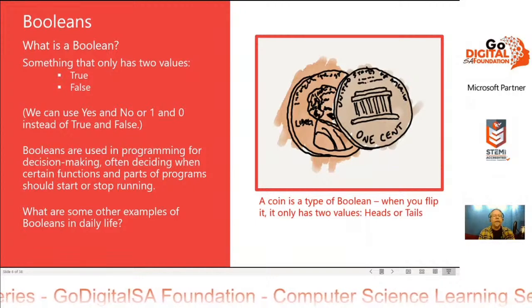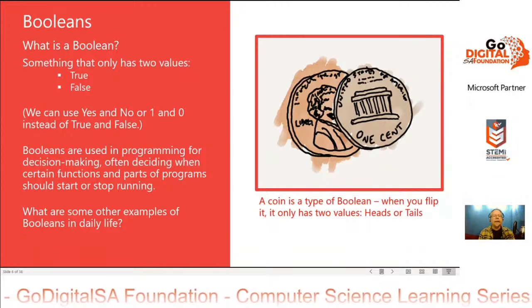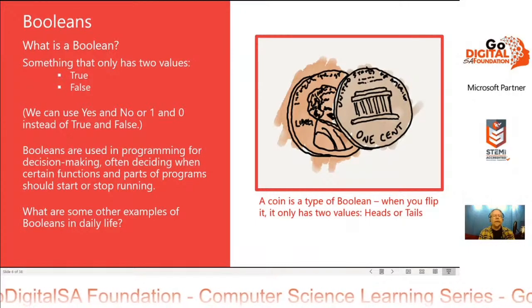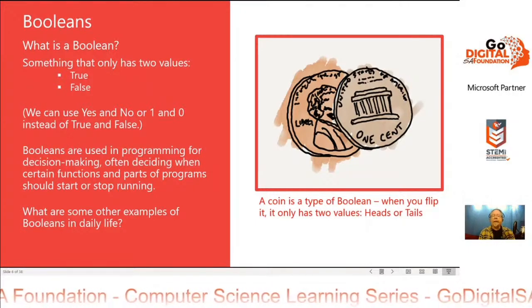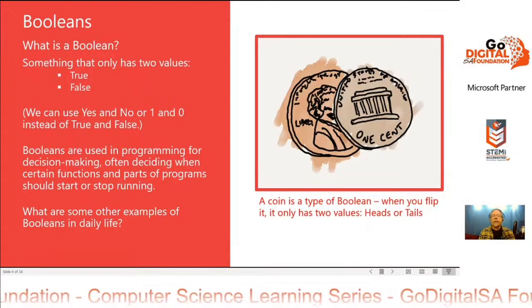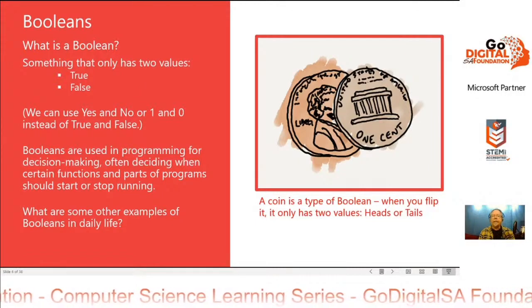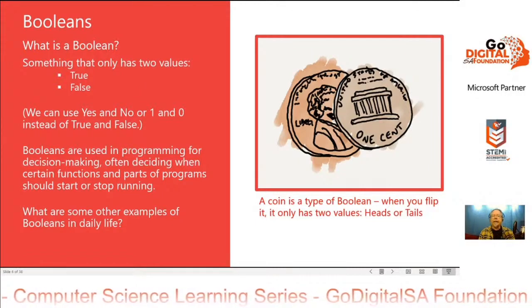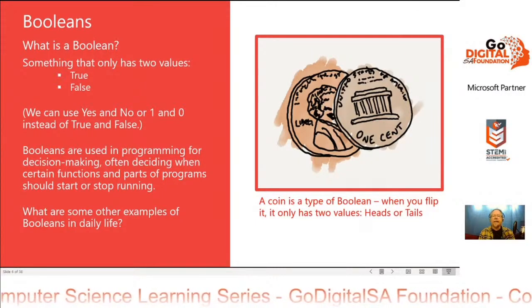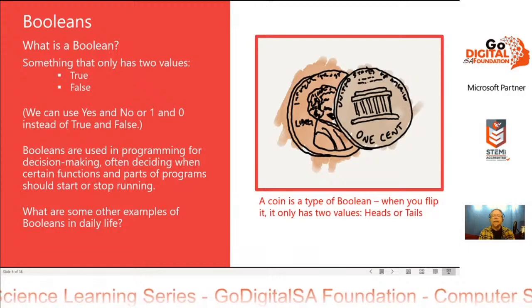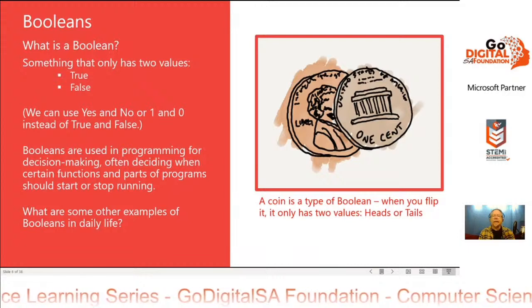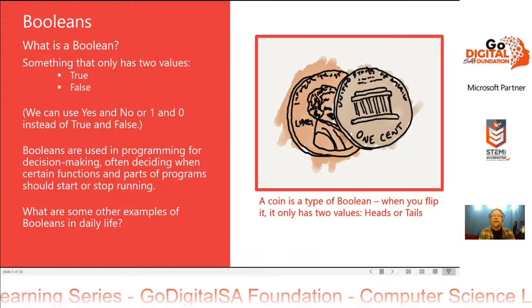What are some other examples of Booleans in daily life? Well, if you flip a coin, a coin has heads or tails. So when you flip it, it only has one of two values: heads or tails.